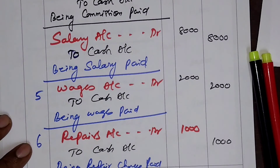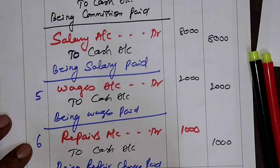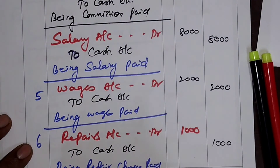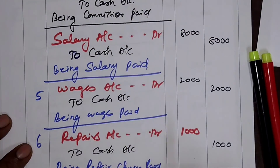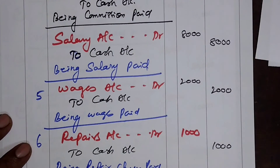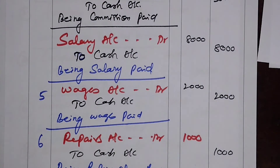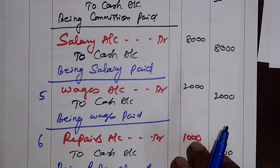You now have a clear idea of how cash is going out of the business for various reasons. This is the way to pass journal entries when cash is going out of the business. Thank you very much for watching this video.